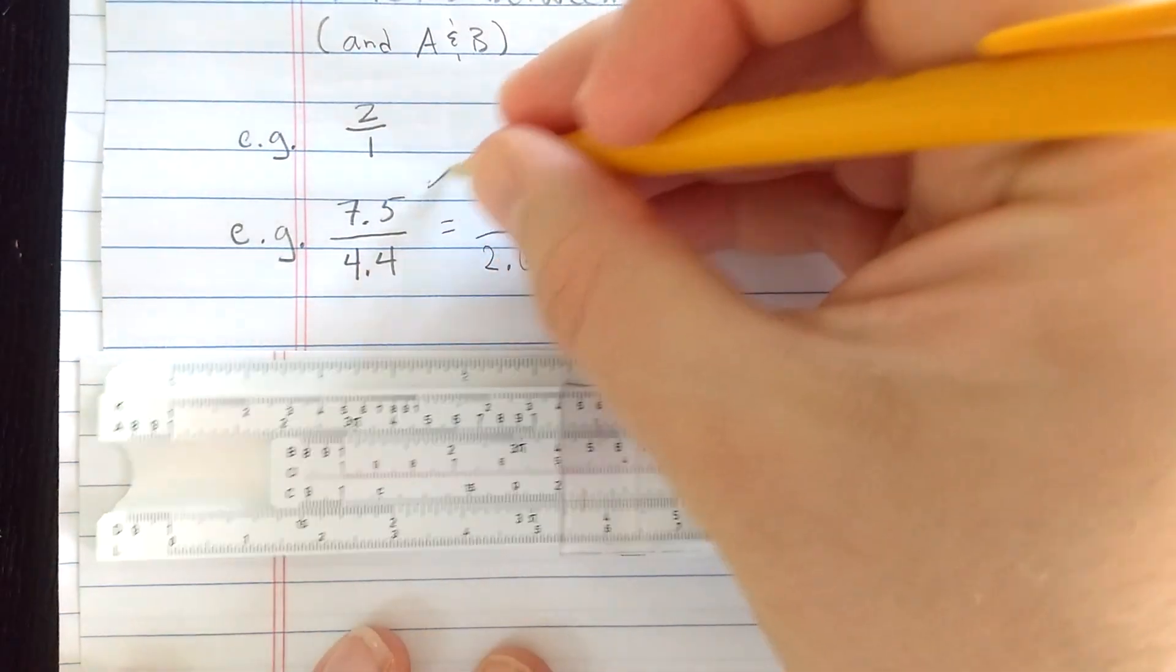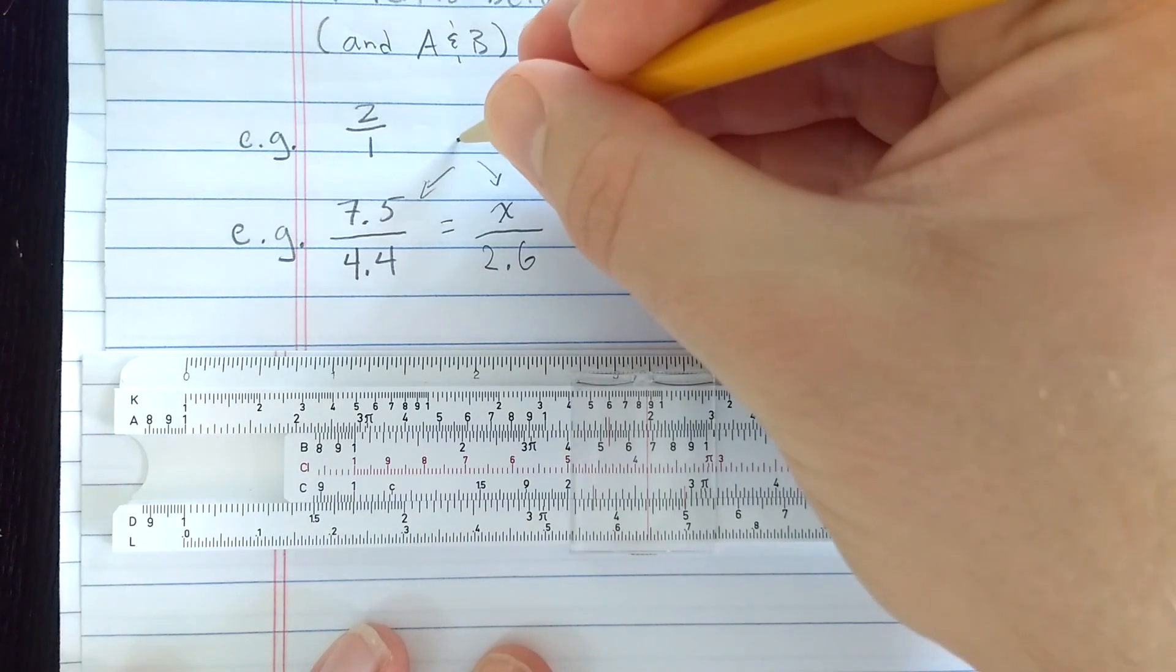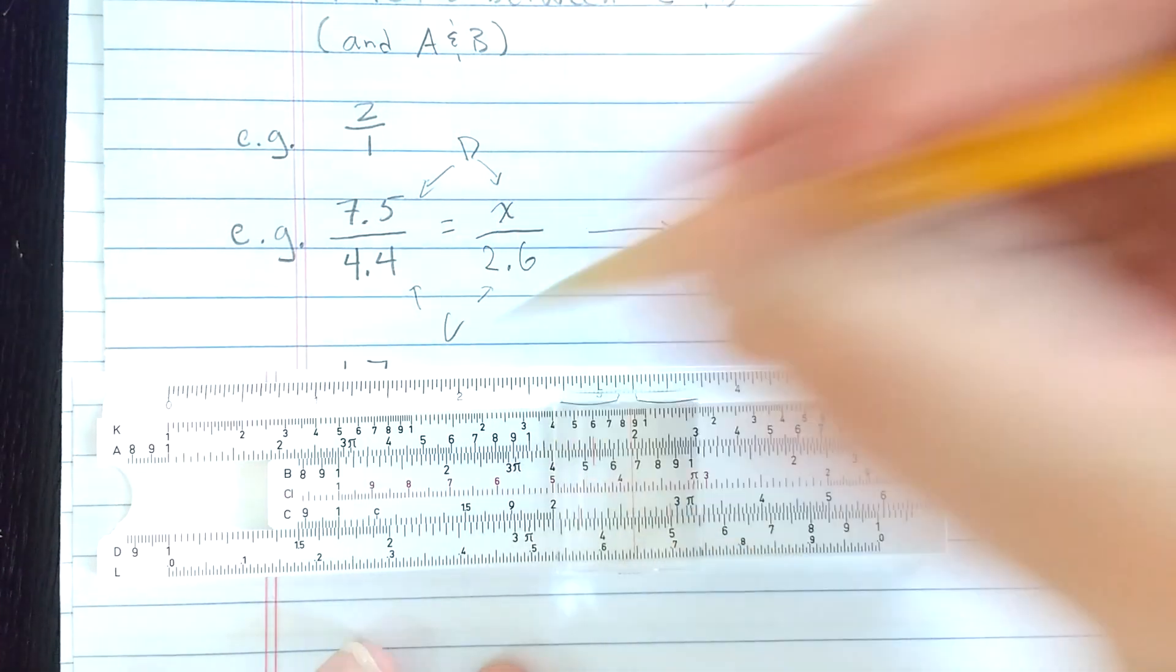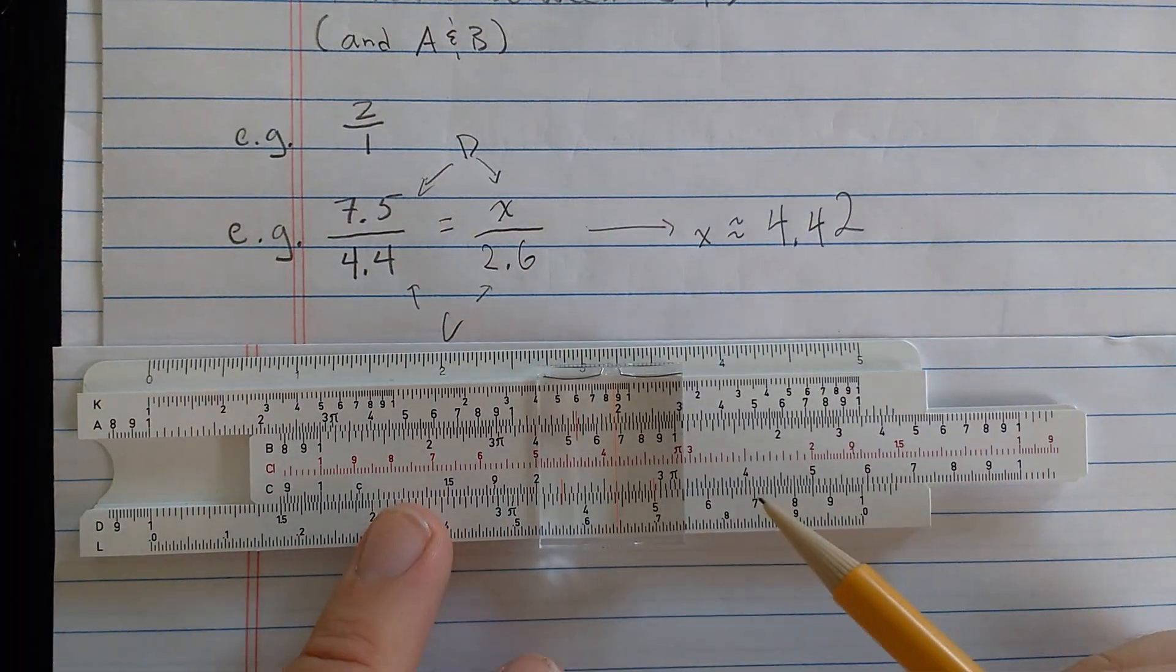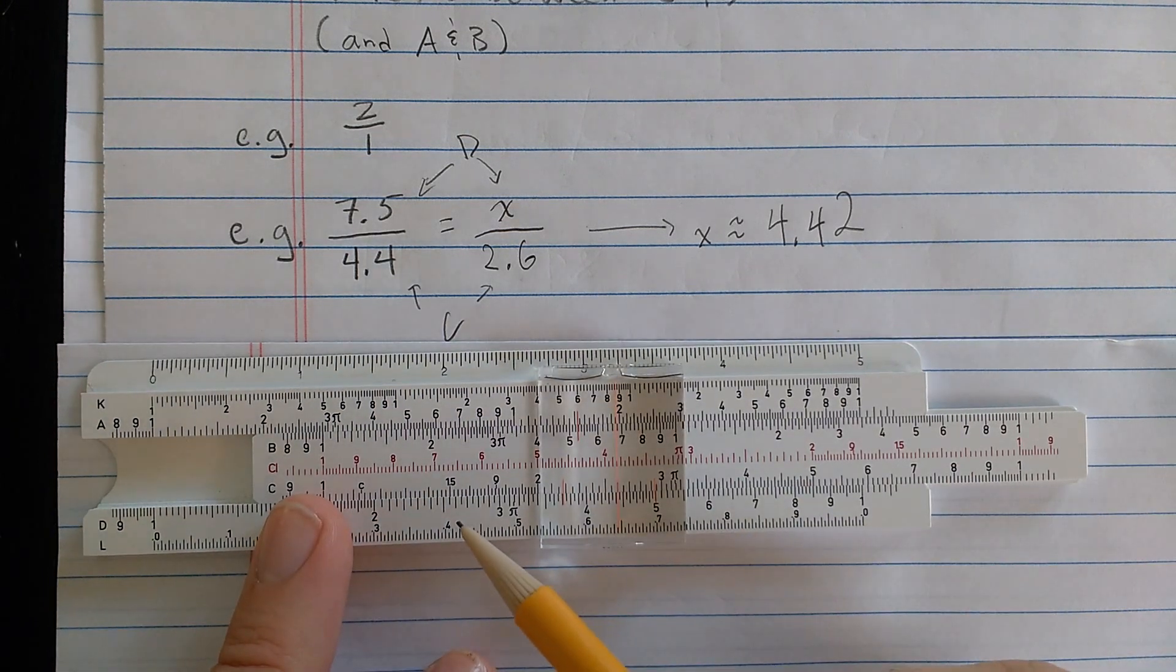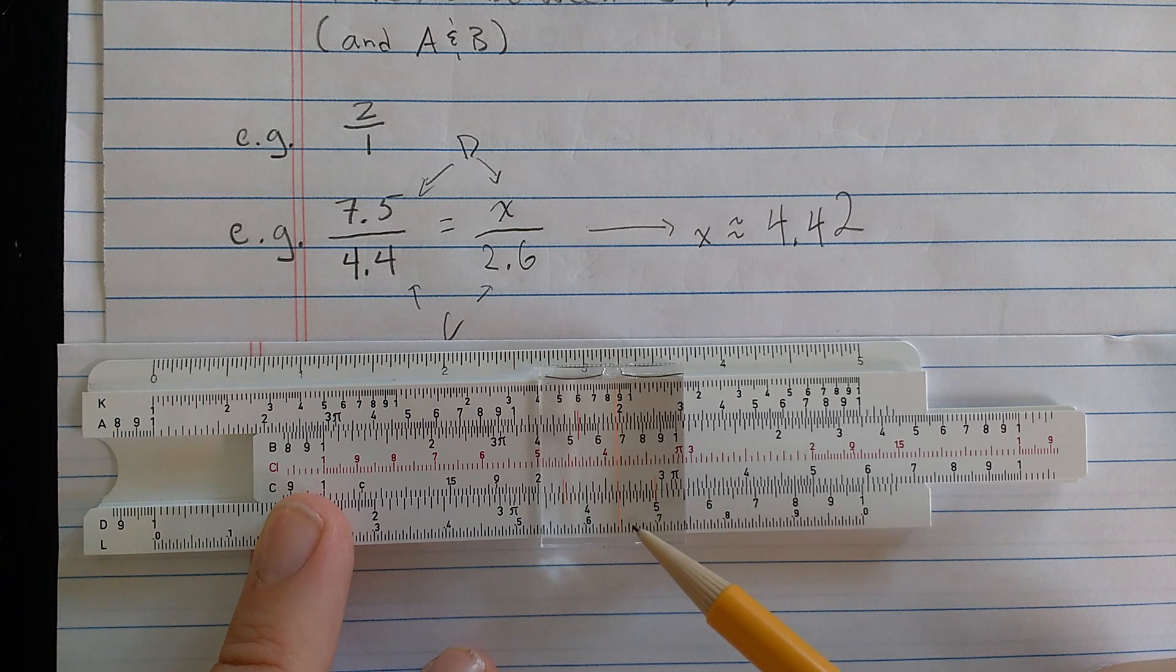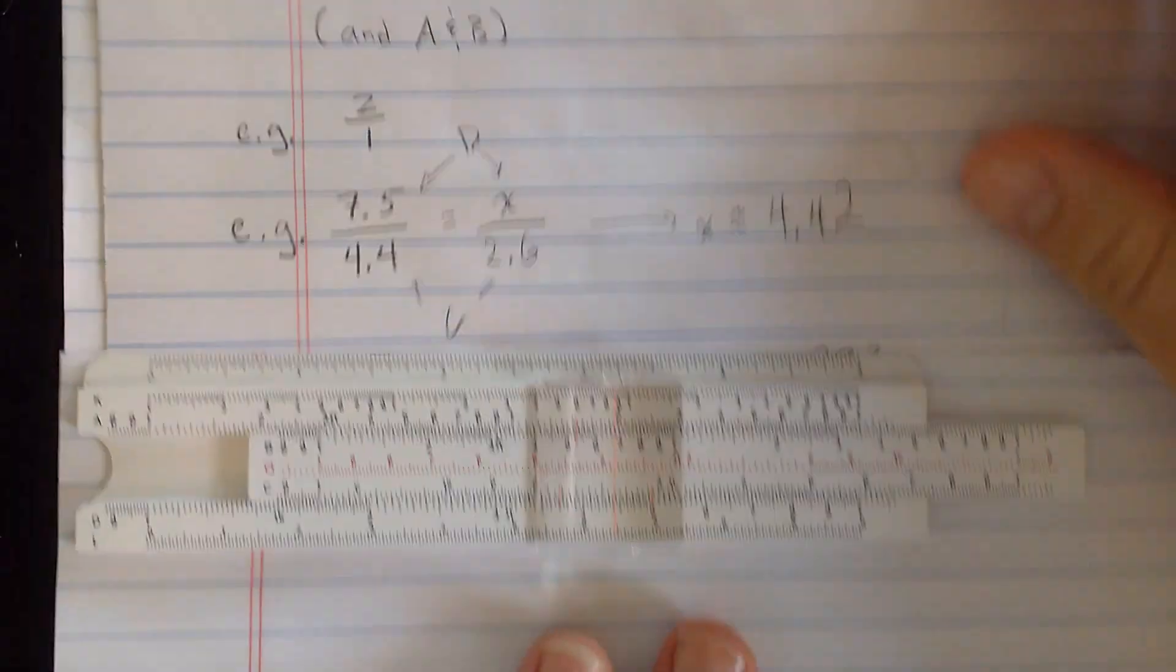But you can see how I've solved this proportion by setting the ratio between the two scales, the C and the D scale, to this ratio. Then I look up this number on the C scale and I read x on the D scale. So if you want to think of it like this, I've set these numbers on the D scale and these numbers on the C scale. So here, I've got the 7.5 and the 4.4. And then here, I've got the x, where I have the cursor set. I have the x, 4.42, to the C scale is 2.6. Okay, let's do another.